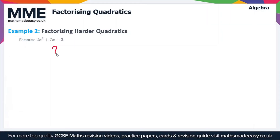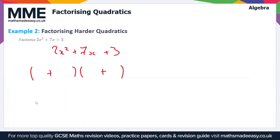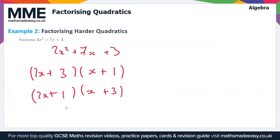Now let's look at the final example: 2x squared plus 7x plus 3. The first thing to notice is that all the terms are positive, so our double brackets are going to be plus something in each bracket. We also need to get plus 3 on the end and a 2x squared term at the beginning. The two combinations to try are (2x + 3)(x + 1) or (2x + 1)(x + 3), using 3 and 1 since they're the only factors of 3, and one bracket must contain 2x to get the 2x squared term.